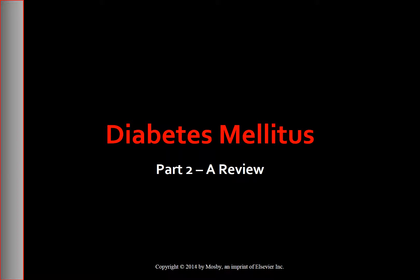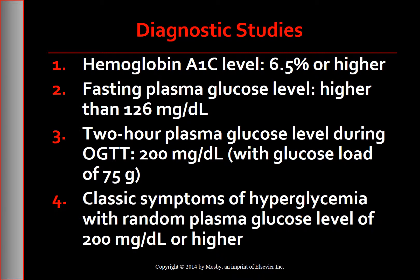To continue what was left of part 1 of the review for diabetes. The diagnosis of diabetes mellitus is made through one of four methods. These methods and criteria for diagnosis are as follows.